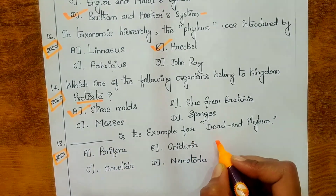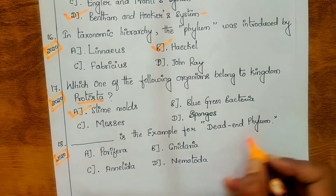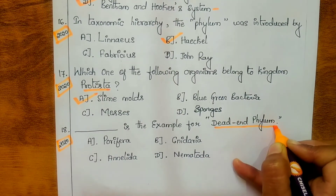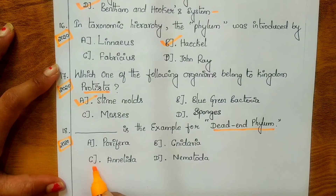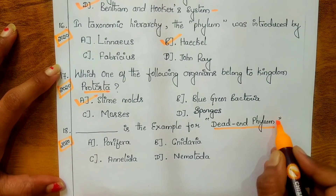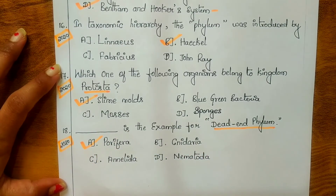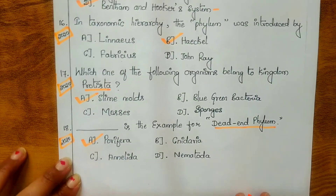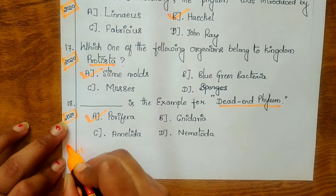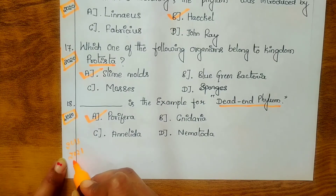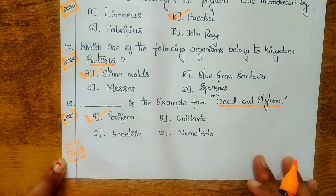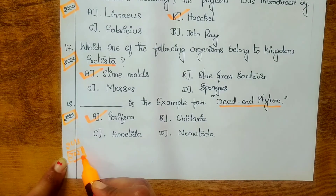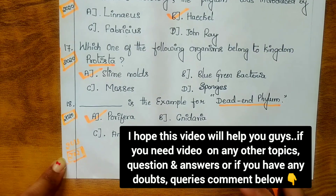Eighteenth question, from 2020: which phylum is the example of a dead-end phylum? Options are: Porifera, Cnidaria, Annelida, and Nematoda. The answer is Porifera. These are all the questions from 2013 to 2021 KSLET Life Science on the topic diversity of life forms. Note that in 2021, no questions were asked on this topic.